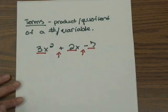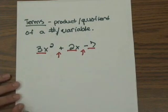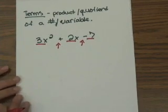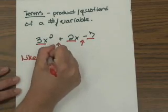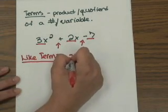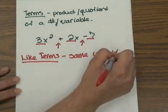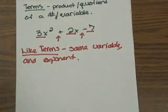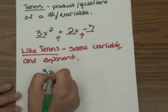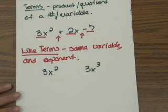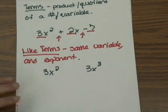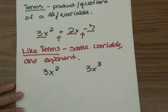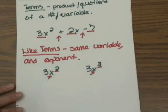You can add and subtract terms, but only when they're like terms, which means they have the same exact variable and exponent. For example, 3x squared and 3x cubed are not like terms — although they have the same variable, they do not have the same exponent. So you cannot add or subtract those terms together; you would have to leave them separate.